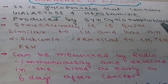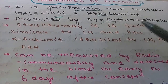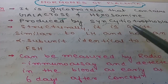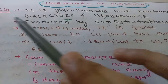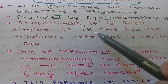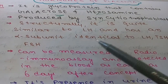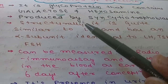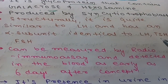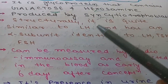HCG is produced by the syncytiotrophoblast, which is the outer layer of the trophoblast. The trophoblast is differentiated into two layers: syncytiotrophoblast and cytotrophoblast. Structurally, HCG is quite similar to LH. It is formed by two subunits, alpha and beta, and the alpha subunit is identical to LH, TSH, and FSH.